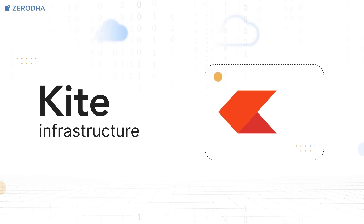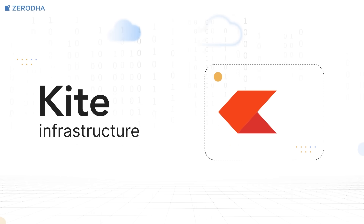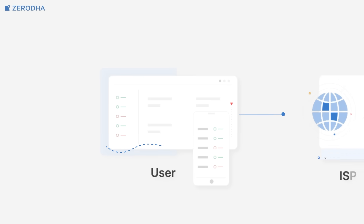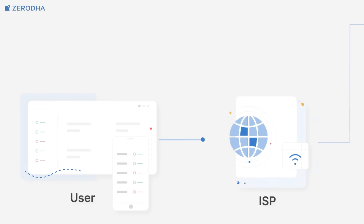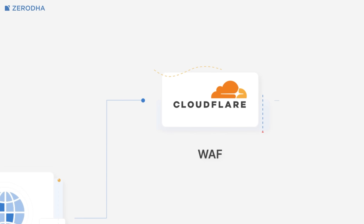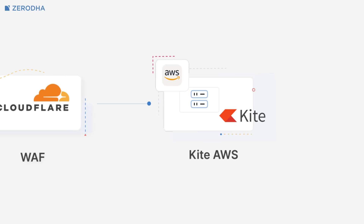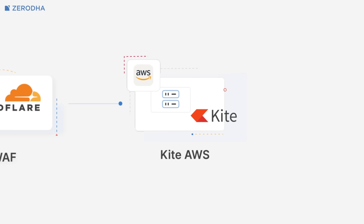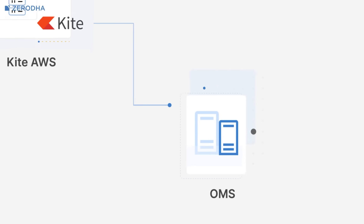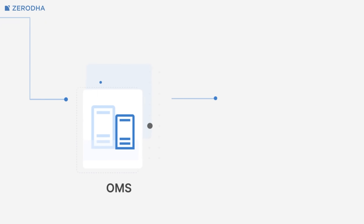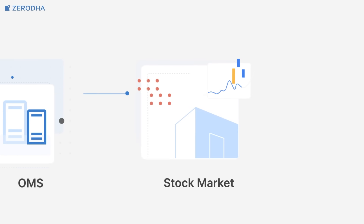Here's how Kite's infra works. When you place an order on Kite web or app, your request goes through Cloudflare security screening, then to our AWS cloud servers where Kite services run, and finally to our physical backend servers that connect directly to the exchange. Here, we have three availability zones, backup regions, and multiple connection paths to maintain high availability.